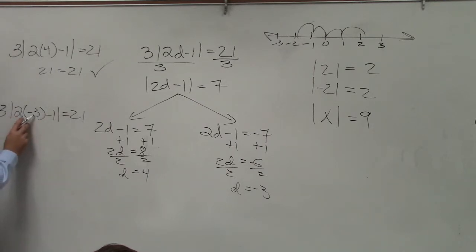Here, 2 times negative 3 is negative 6. Negative 6 minus 1 is negative 7. Absolute value of negative 7 is positive 7. Positive 7 times 3 is 21. 21 equals 21. So they are both solutions.